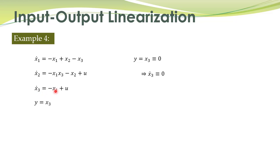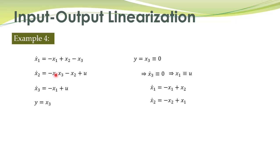With x1 equal to zero substituted, and u equal to x1, we get the equations: x1 dot equal to minus x1 plus x2 (since x3 is zero, that term disappears), and minus x2. With u equal to x1, these two equations describe the internal zero dynamics of this system.